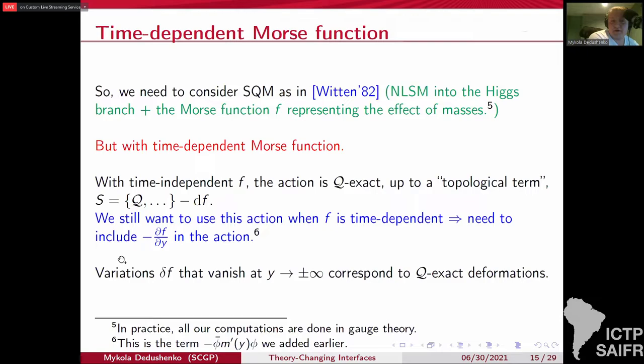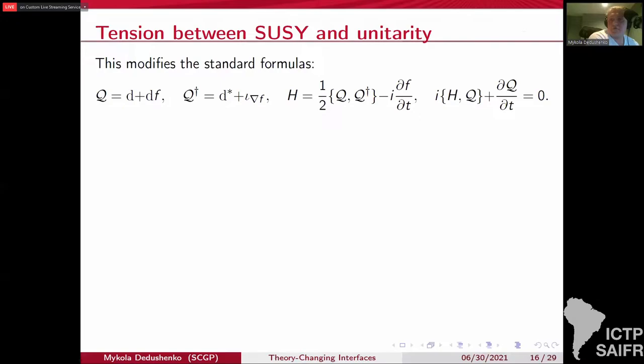You can just independently infer using the supersymmetric variations. So we're going to use this action. And you can see already from here that the variations of your Morse function that vanish at infinity, the Q-exact deformation. So in other words, the Morse function somehow changes with time. But if you keep, and you can wiggle it while keeping the asymptotic values, the asymptotic functions fixed. And then this gives you Q-exact deformations of the theory and they should not be visible for the BPS computations.